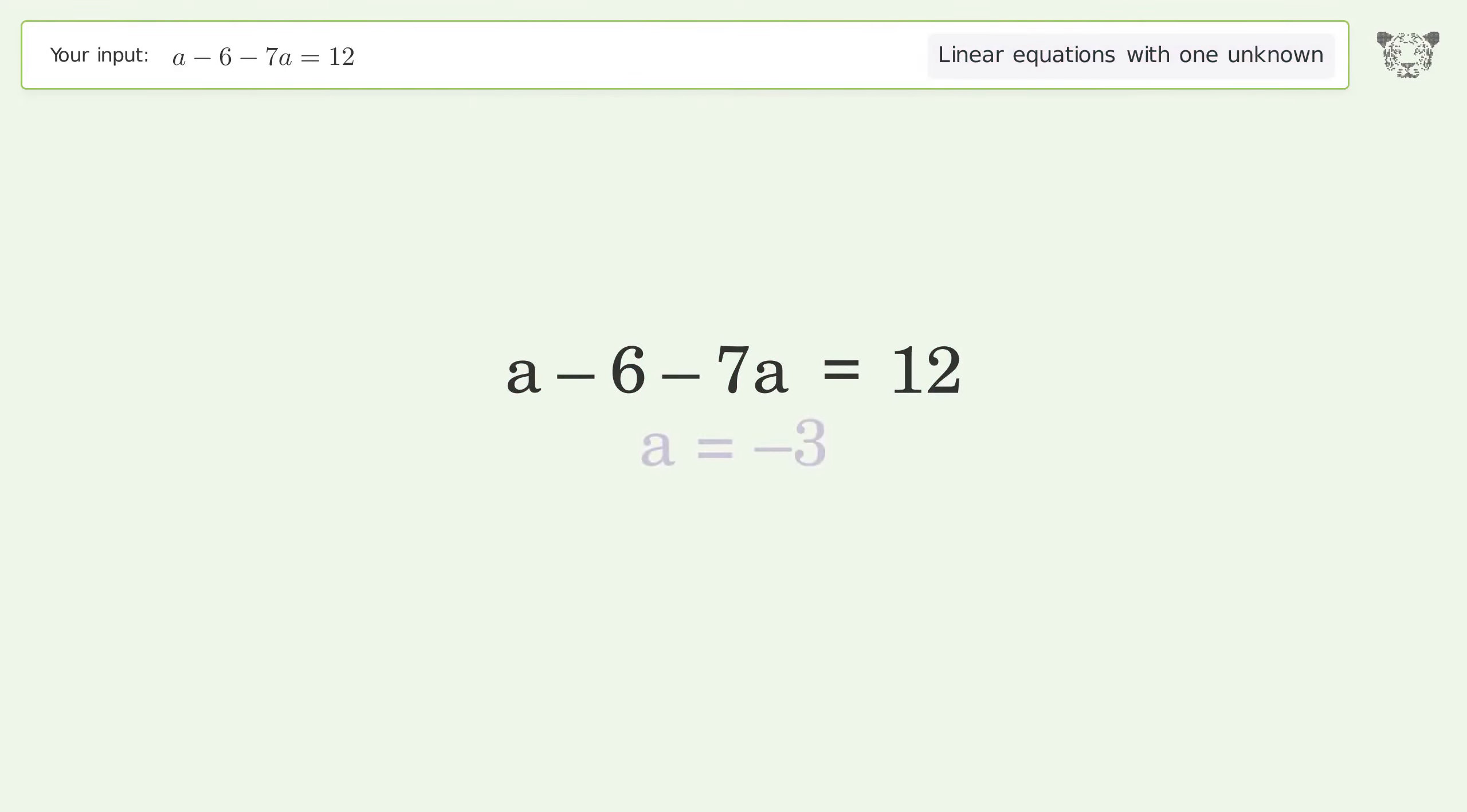You asked Tiger to solve this linear equation with one unknown. The final result is a equals negative 3. Let's solve it step by step. Step 1: Simplify the expression.